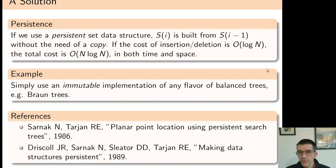One solution to this problem is to use a persistent data structure. A persistent data structure is where, when you do an operation like insertion or deletion, you are not modifying the initial data structure. This way we can build the next set from the previous one. If the cost of these operations is logarithmic, then the total cost will be O(N log N), because each element is inserted and deleted exactly once.